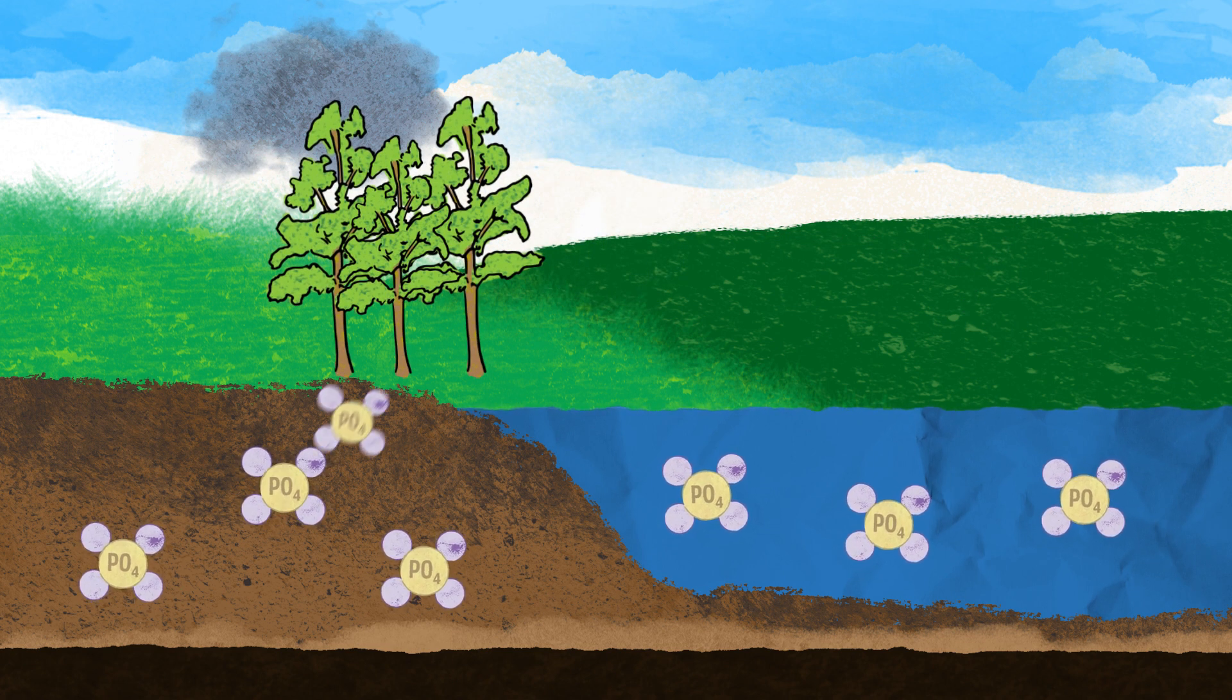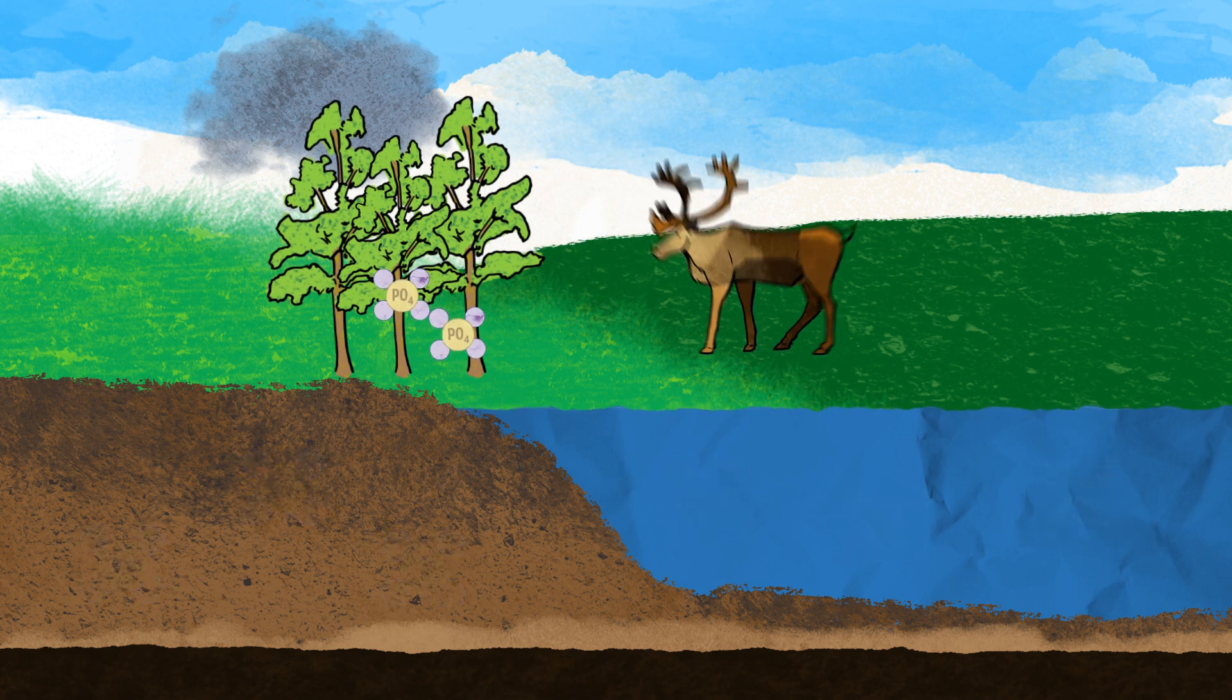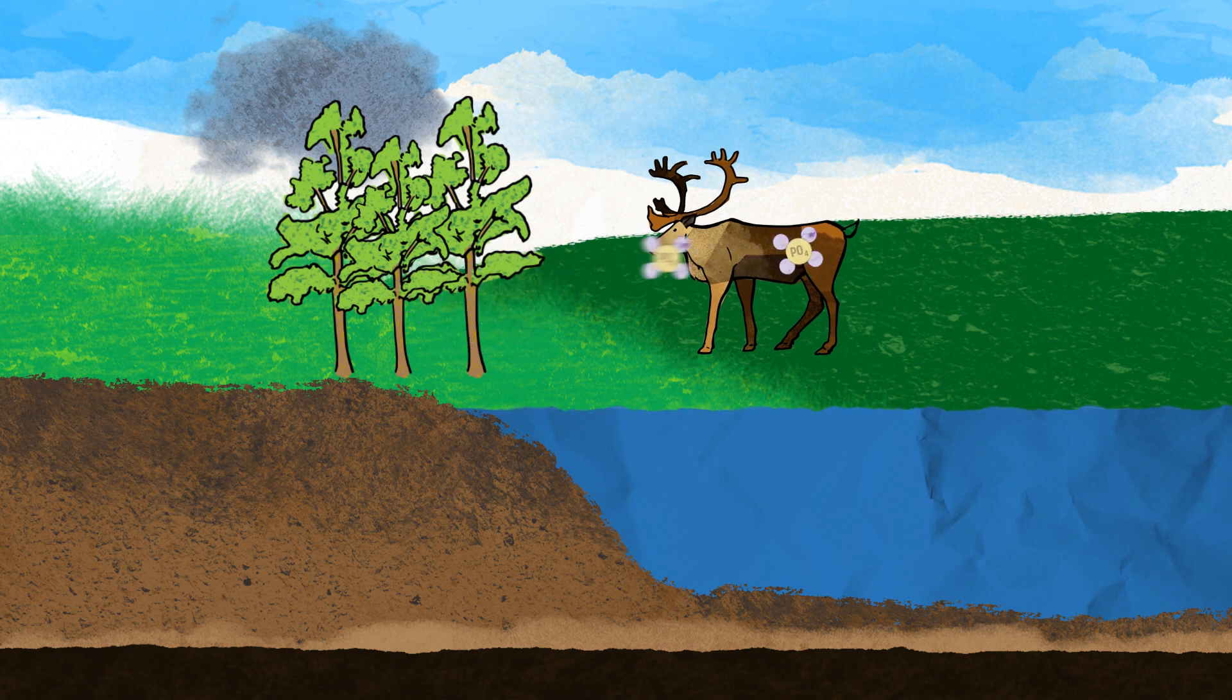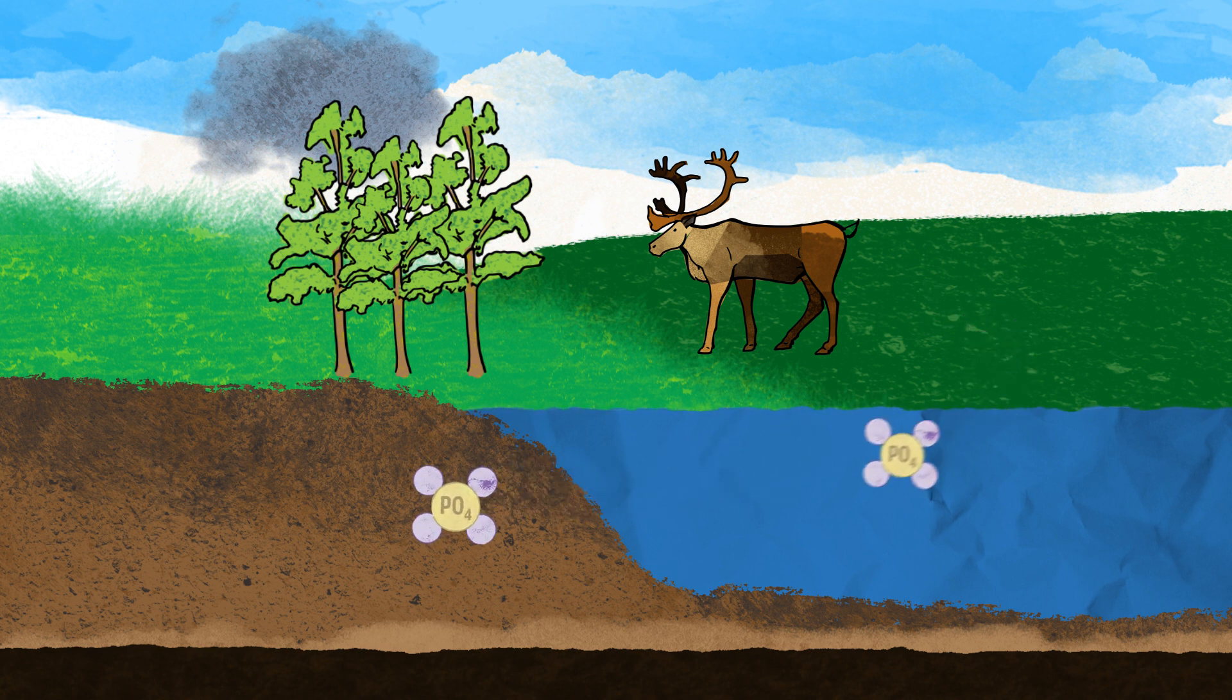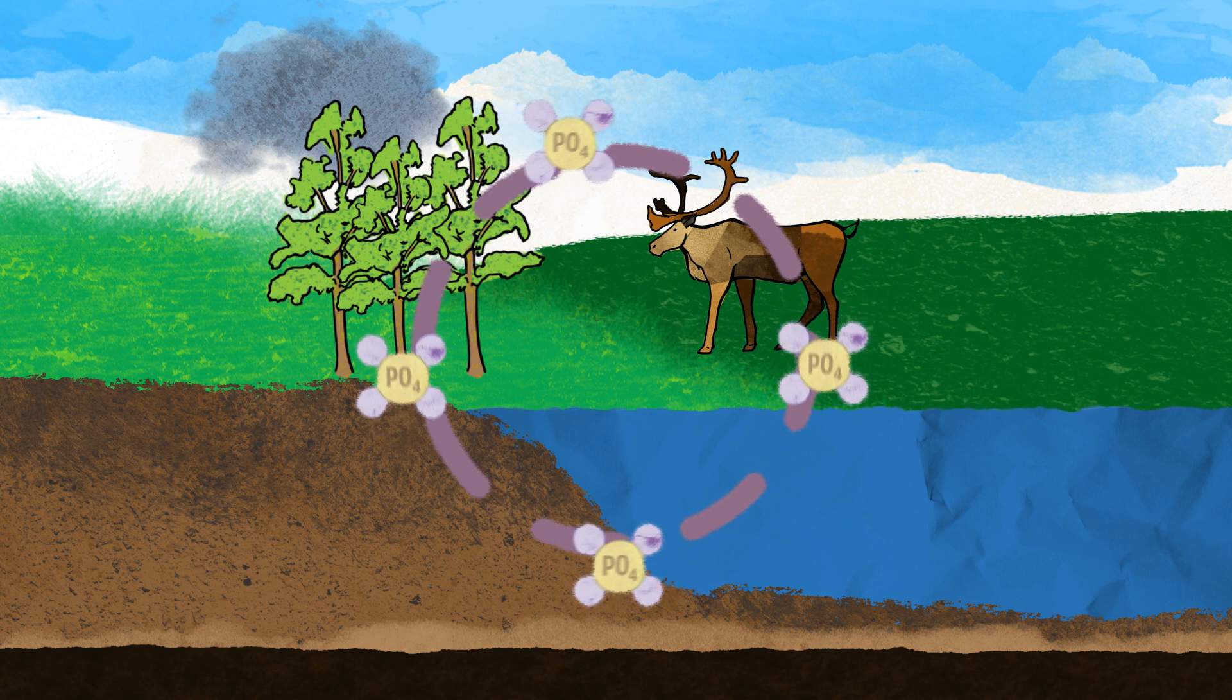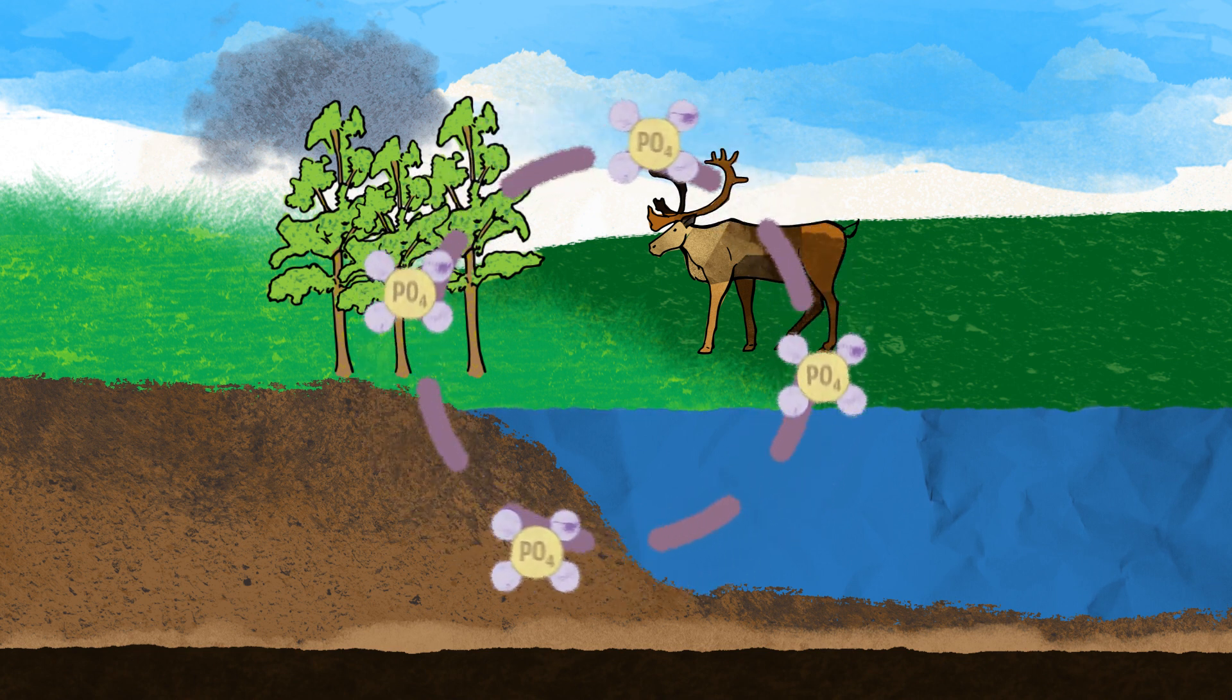Plants absorb phosphate from soil and water. Animals acquire phosphate when they eat plants. Animals excrete phosphate and the phosphate returns to soil and water. The cycling of phosphate between plants and animals is the short-term cycle.